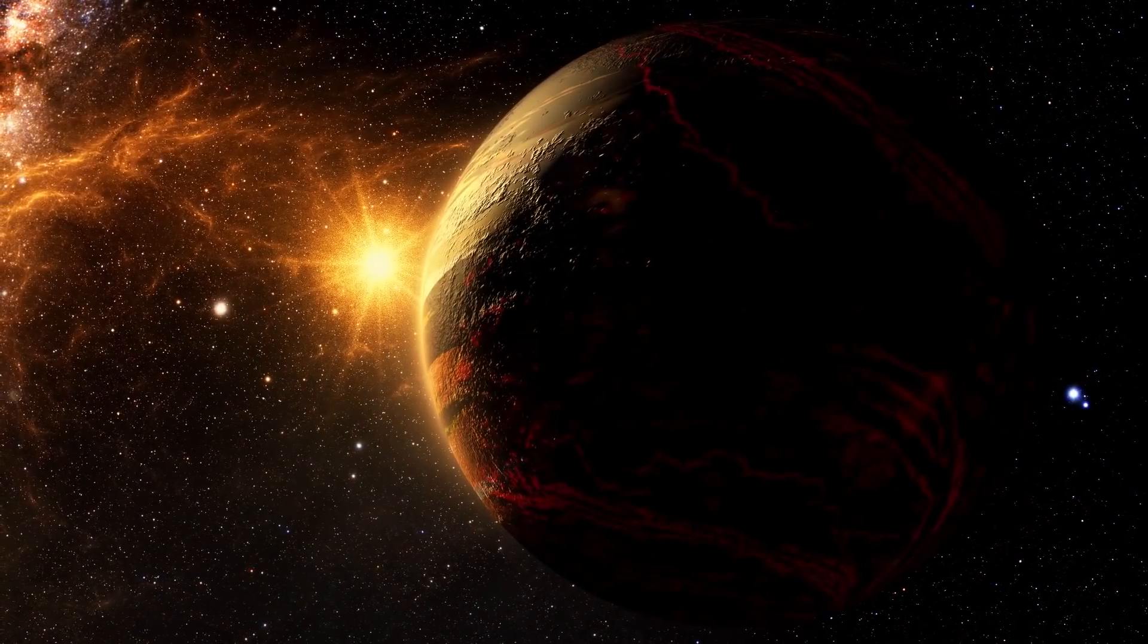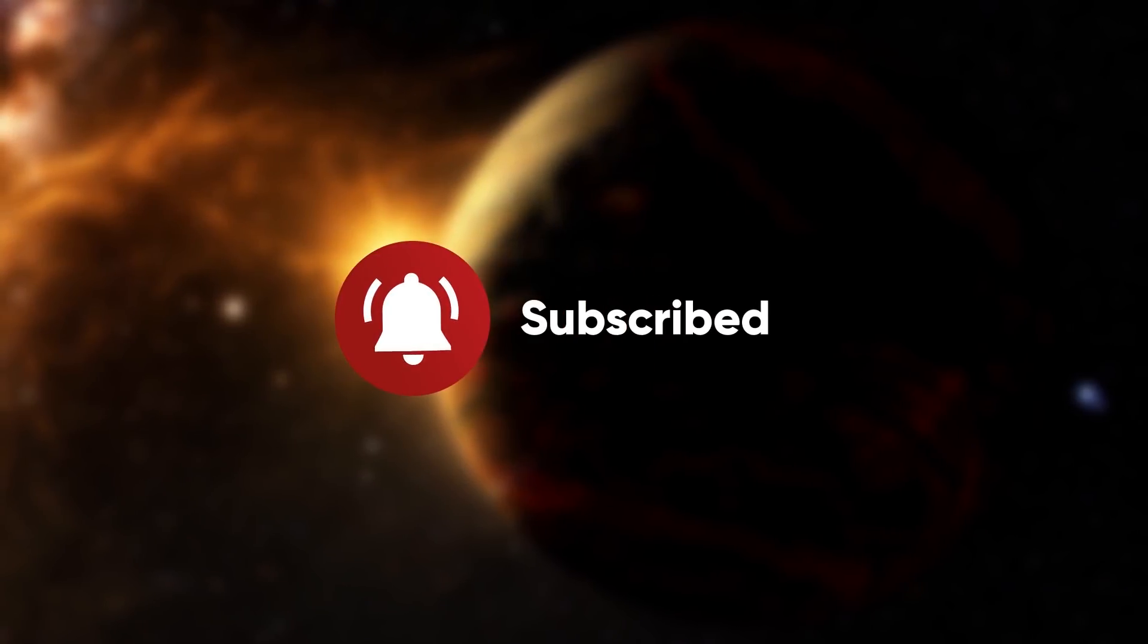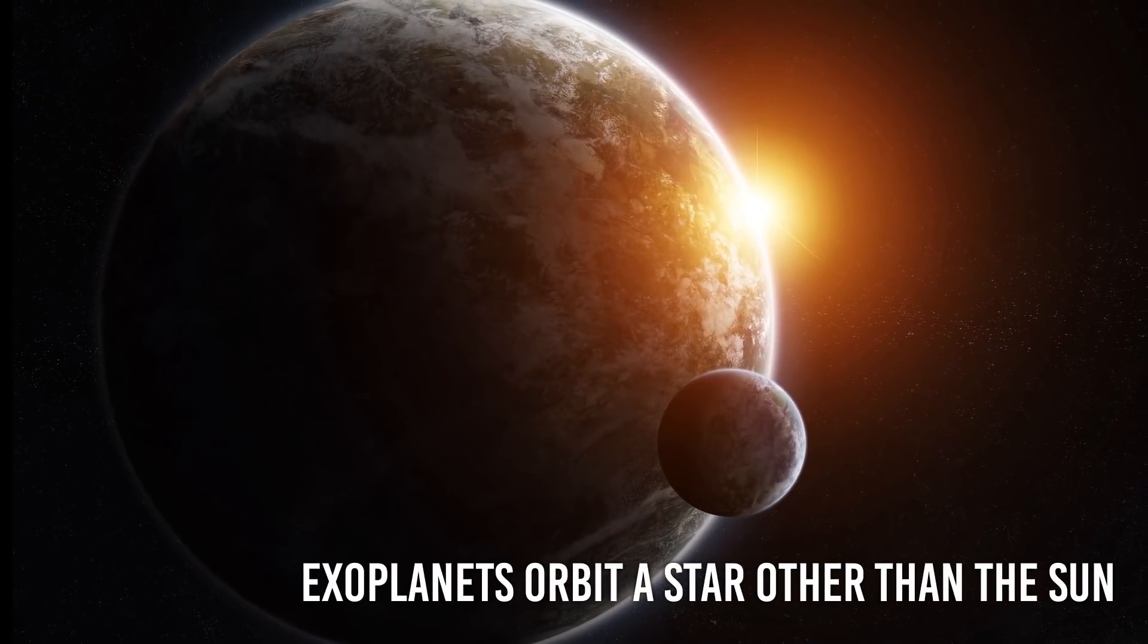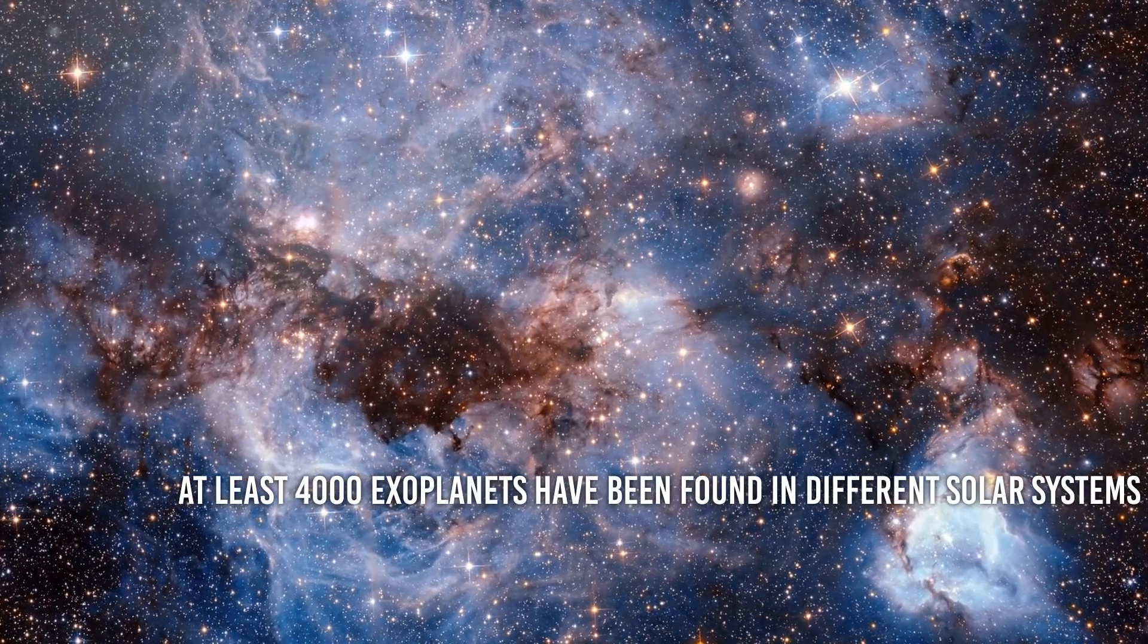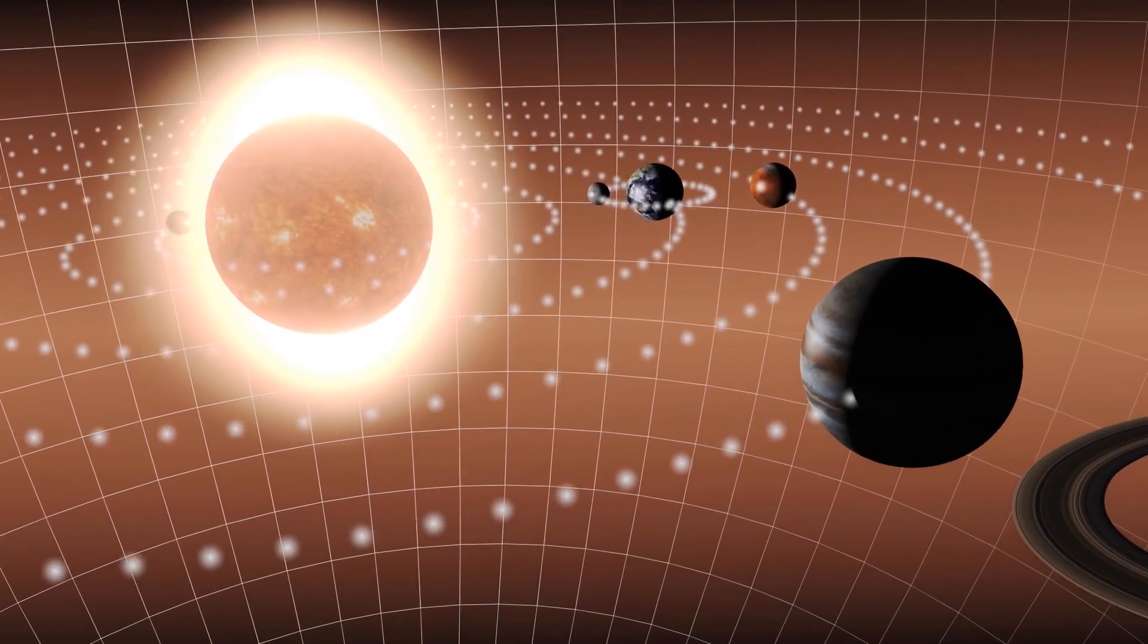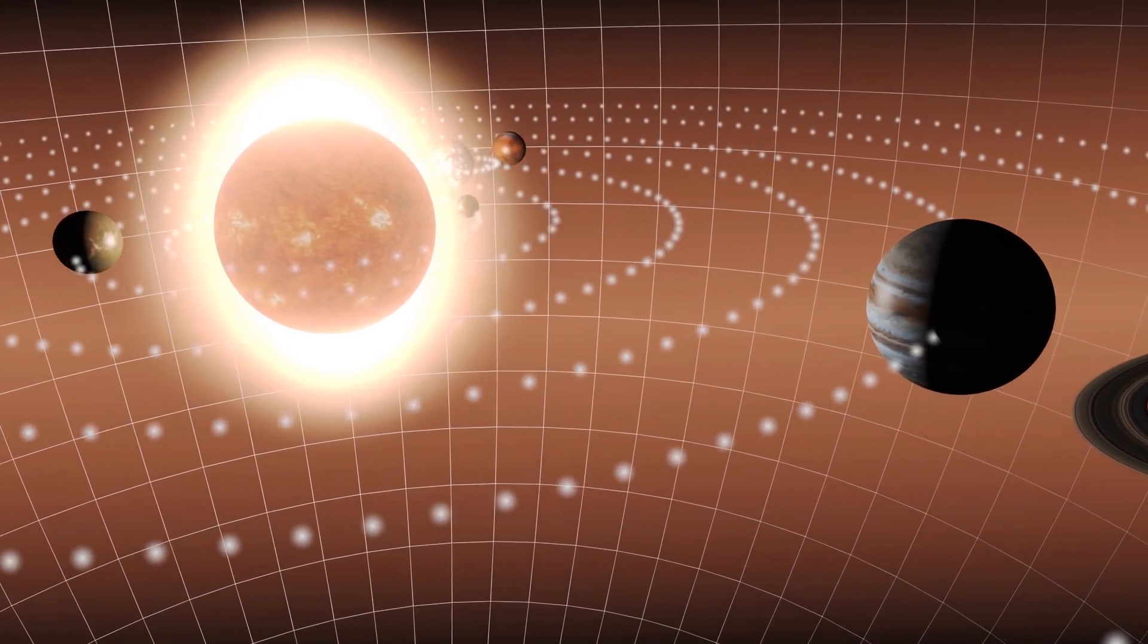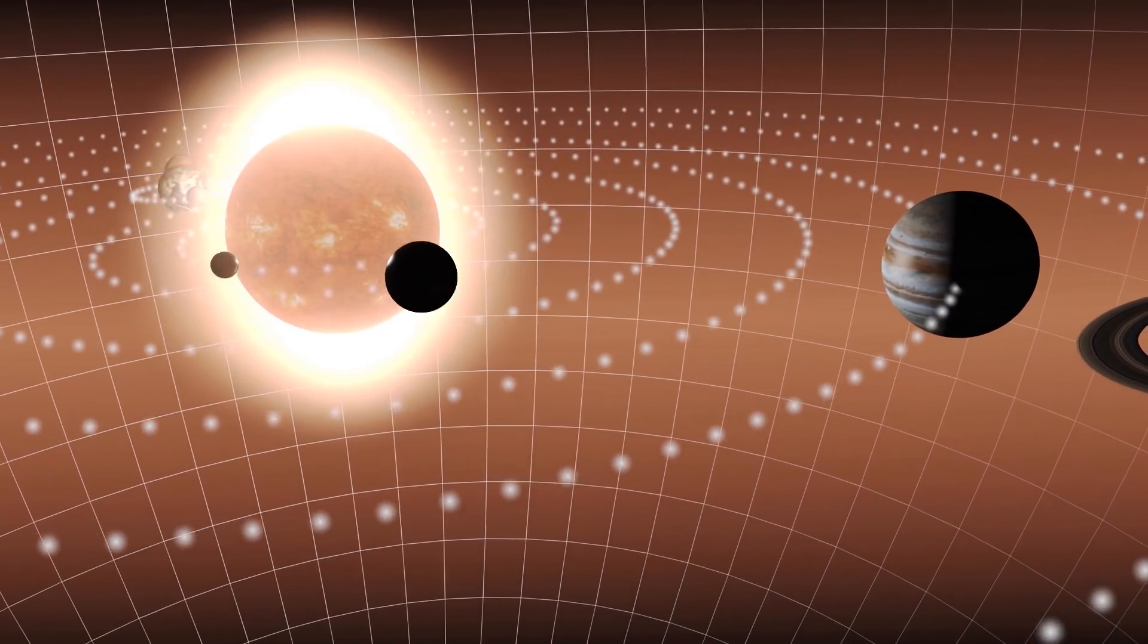Exoplanets. In this channel, we have made a lot of videos about exoplanets. We invite you to subscribe so that you don't miss any. Exoplanets orbit a star other than the Sun. They are planets from other solar systems far from our own. Currently, at least 4,000 exoplanets have been found in different solar systems. As we discover new worlds out there, we realize that most of the planets in the galaxy are very different from those in our solar system.